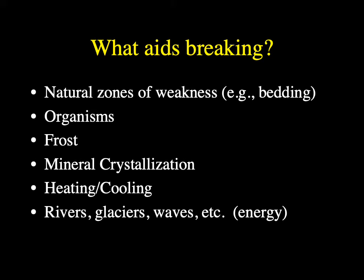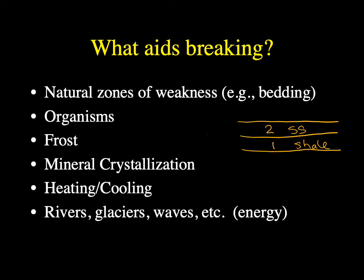Before we break down our rocks by physical or chemical means, we can talk about which rocks are more susceptible. If rocks have natural zones of weakness — like already preexisting sedimentary rocks — flat-lying sedimentary rocks usually have contacts between individual beds. The boundary between two beds is called a bedding plane, which is a zone of weakness that can actually help rocks break apart.